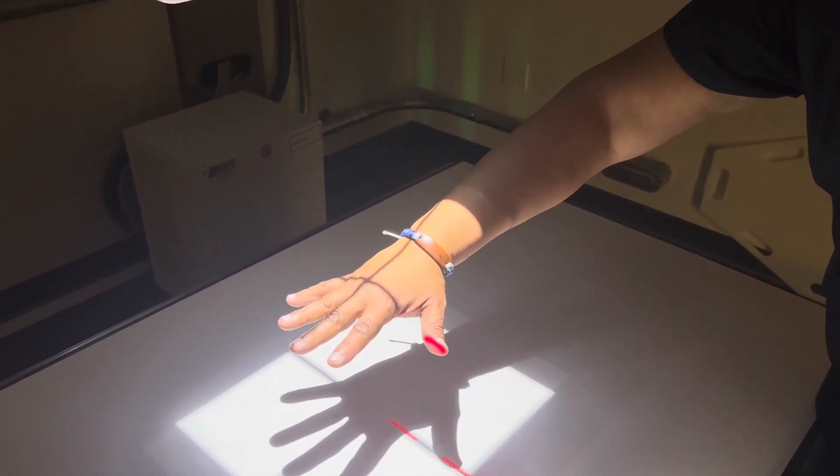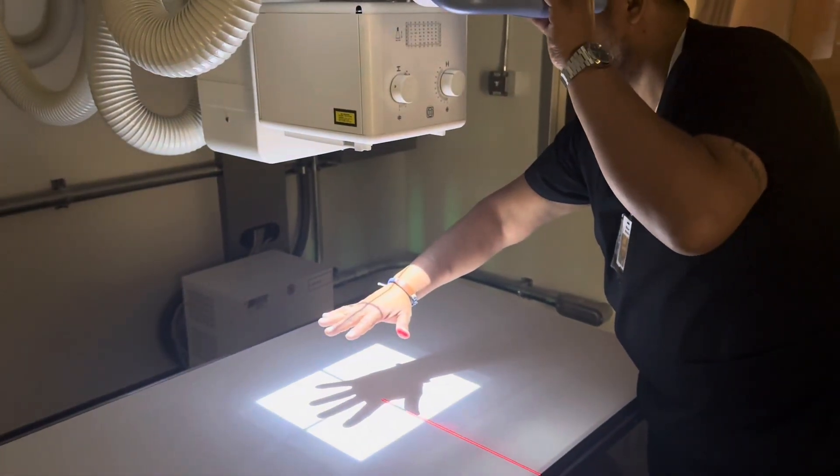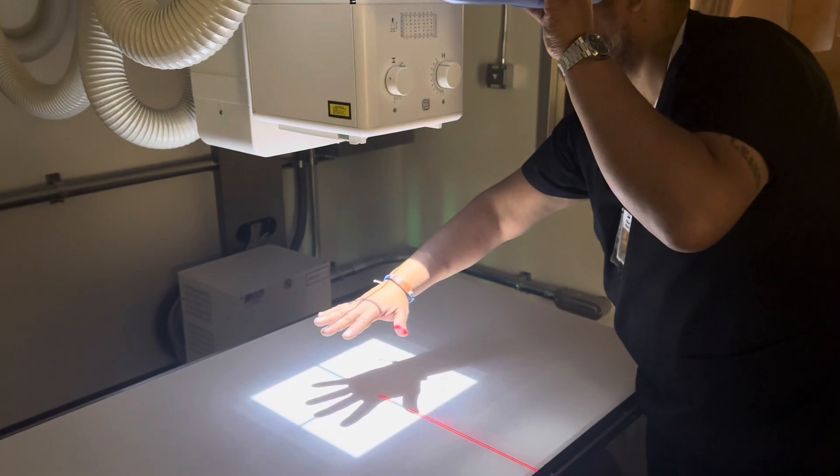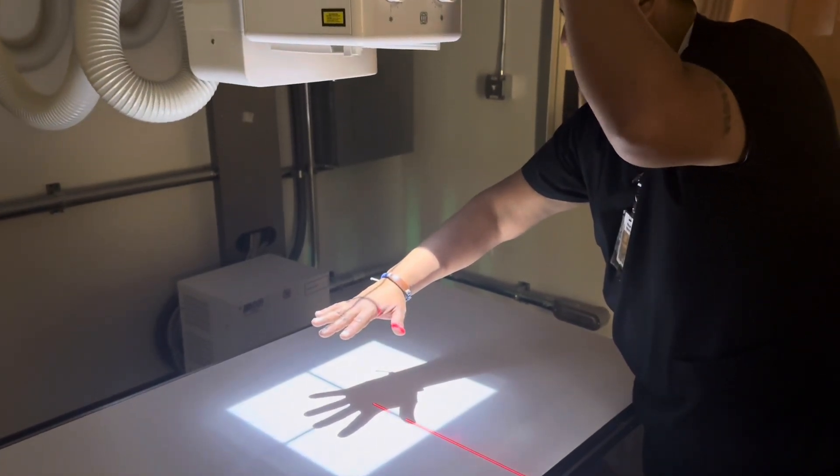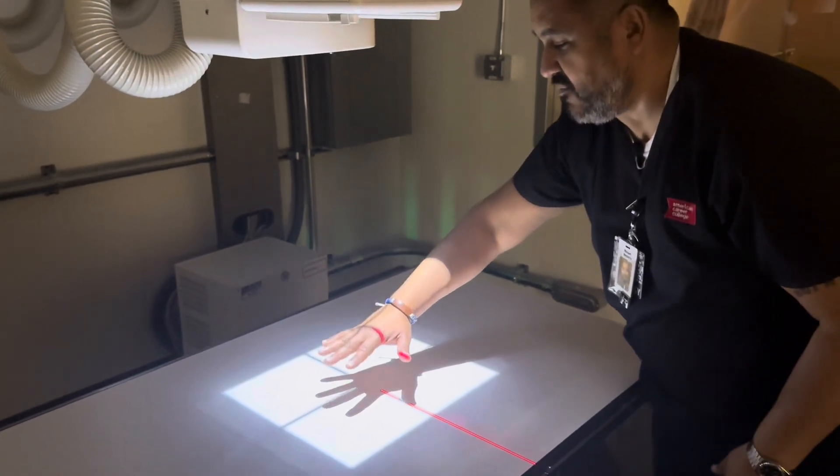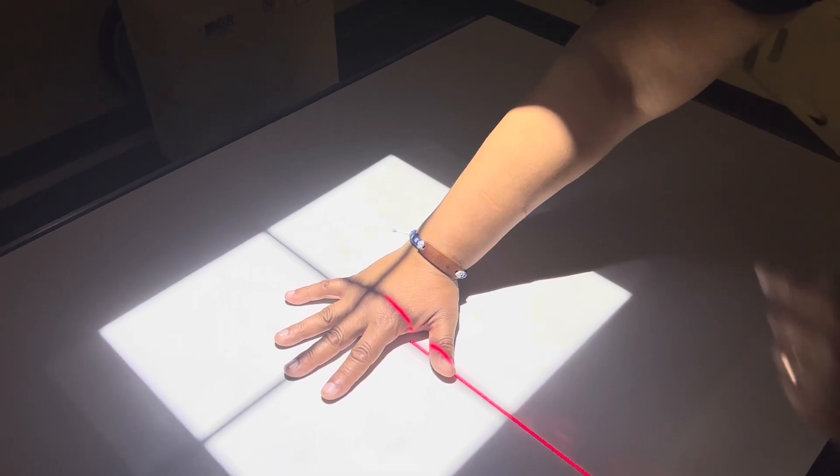Now watch if you bring the SID down, I don't know if you guys could see this but the shadow around my fingers is getting larger. So when you bring down the SID you're going to get more magnification. So you always want to try to increase your SID we said and bring down your OID as much as possible.